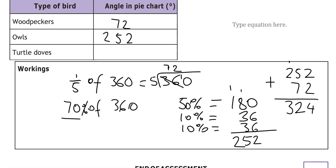So we'll take that away from 360. So 0 take away 4 means that we need to borrow 1 from the 6. Make it 5 and this becomes a 10. 10 - 4 is 6. 5 - 2 is 3. 3 - 3 is 0. So 36 degrees for the turtle doves.